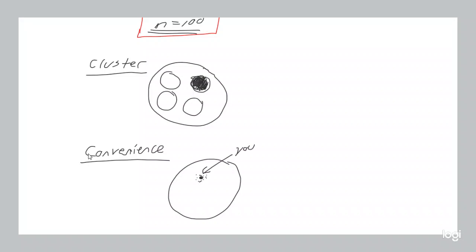For example, in cluster sampling, which cluster do you pick? Likely the one more convenient for you. In stratified sampling, once you've defined your strata and want 50% male respondents, which males do you pick? Probably the more convenient ones. We call something convenience sampling specifically when convenience is the main sampling method — not just present in the background, but the dominant factor. For instance, studying people's favorite movie genre by asking your 10 best friends or family members.